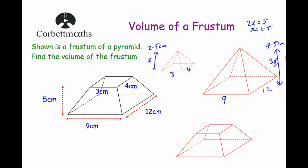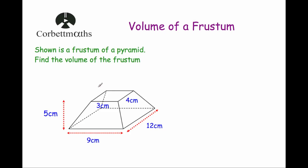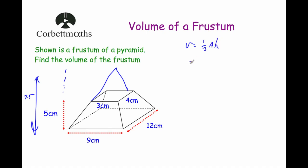Now let's do the question. We know the height of the whole pyramid was 7.5. I'm going to sketch a pyramid. The volume of a pyramid is equal to one third times the area of the base times the height. So for the whole big pyramid that's going to be one third times nine times 12 times 7.5. And that gives us 270 centimetres cubed.